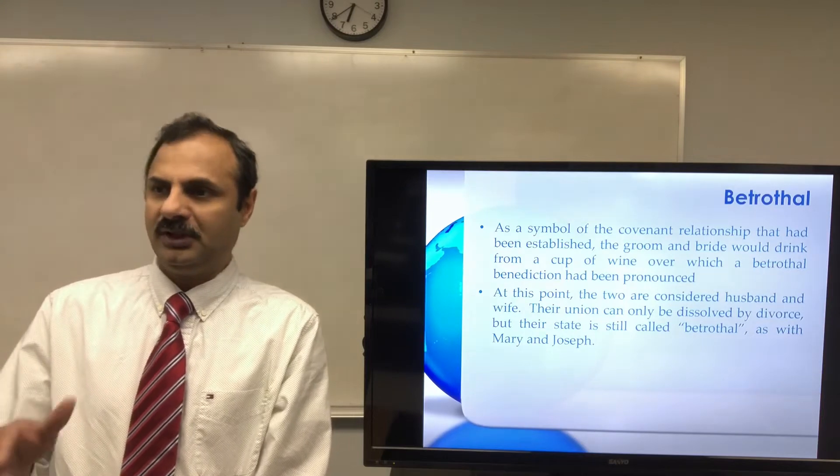At the end of the period of separation, the groom would come to take his bride to live with him. The taking of the bride usually took place at night. The groom, the best man, and other male escorts would leave the groom's father's house and conduct a torchlight procession to the home of the bride — unannounced. Although the bride was expecting her groom to come, she did not know the exact time of his coming.